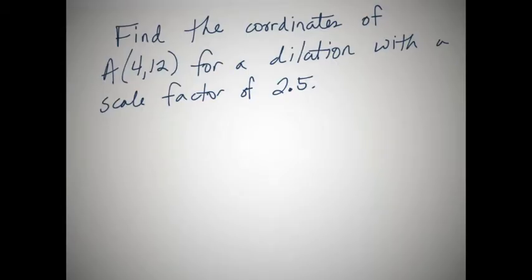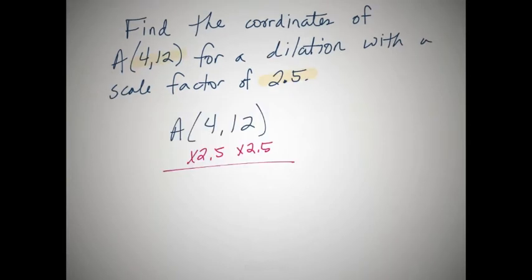Let's take a look at this example. Find the coordinates of A, so this was on our coordinate plane, (4, 12) for a dilation with a scale factor of 2.5. So what we're going to do is we're going to multiply both coordinates, both the domain and the range, by 2.5.